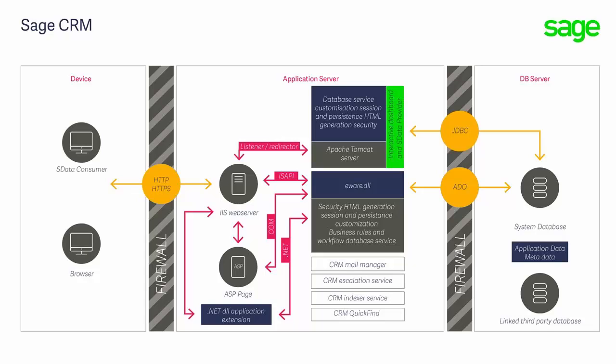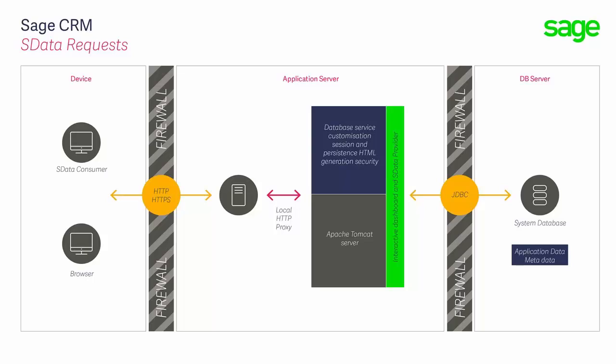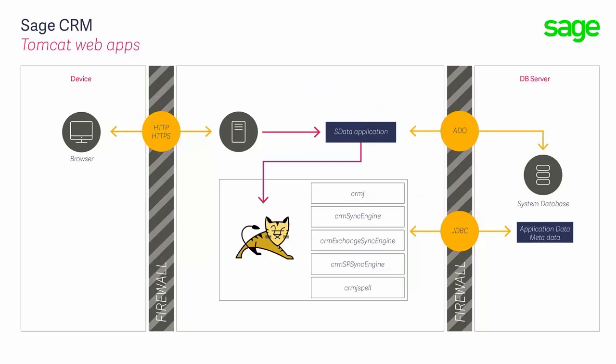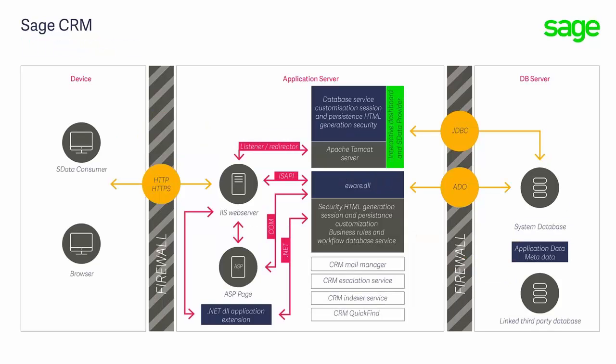There are a large number of features provided through the new Java-based technology. These include the interactive dashboard, data import and export, document drop panel, server-side mail merge, and printing to PDF. In this diagram you can see the way in which requests are redirected from IIS to Tomcat. The Tomcat structure allows additional features to be added to Sage CRM through additional Tomcat web apps — the Exchange integration and Sage e-marketing integration are examples of features provided through these extra web apps.